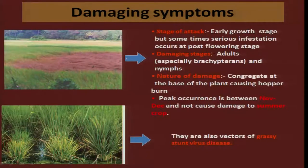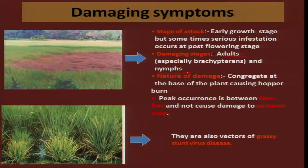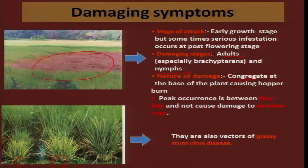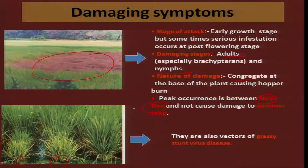Damaging symptoms are very typical in these sucking pests. In the early stage as well as in the post-flowering stage, both adults and nymphs cause damage. They congregate at the base of the plant and start sucking on the plant sap. Because of this, the growth of the plant is affected, causing a typical symptom known as hopper burn — as if the entire patch of the field has been put on fire, giving a burnt-up appearance. The insect is more active during November and December months in the kharif crop, and is not a problem in the summer crop.